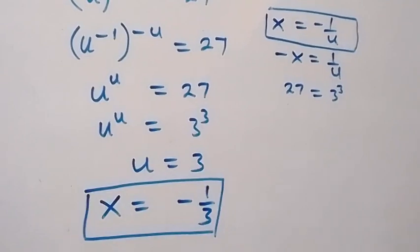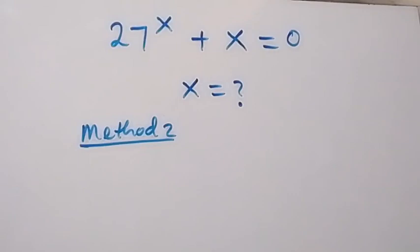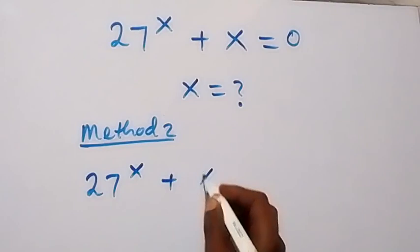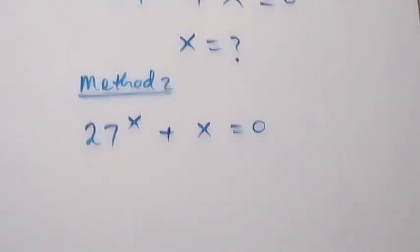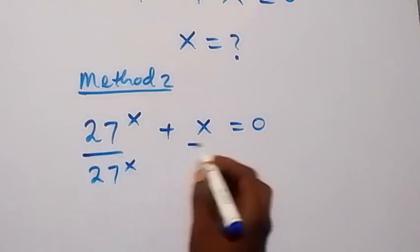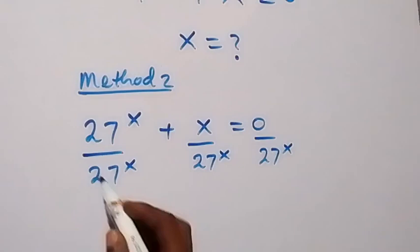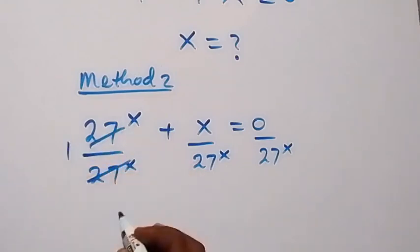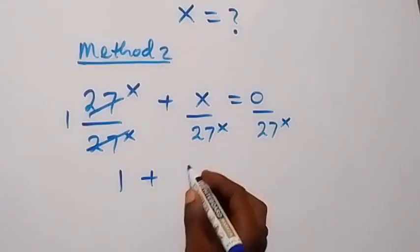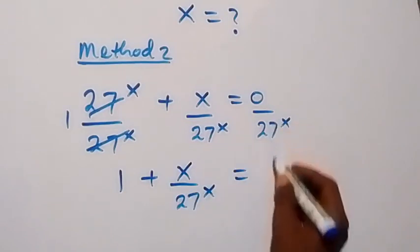Now let's look at the second method very quickly. From what is given, which is 27 raised to the power x plus x equals to 0, we can divide through by 27 raised to the power x on both sides. This side cancels out to remain 1, and we have 1 plus x over 27 raised to the power x, equals to 0.